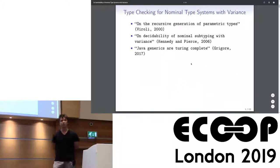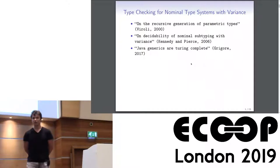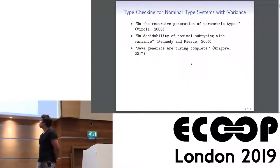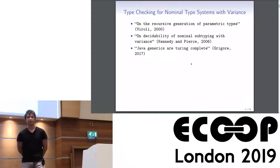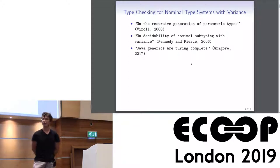My talk is about the first-order satisfiability problem in the type systems of languages like Java, C#, Scala, or Julia. There is a very well-known line of research starting at the beginning of this century and currently ending with a very bright work of Popol 2017.